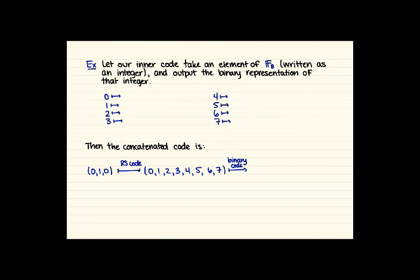The simple way to do this is taking an element of F8, writing that as an integer like we have been, and outputting the binary representation of that integer.